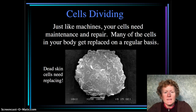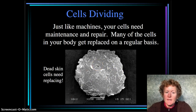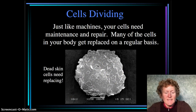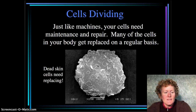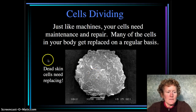Mitosis happens because cells divide. Just like machines, your cells need maintenance and repair. Skin cells are always dying — 90% of household dust is dead skin. So your skin cells need to be replaced on a regular basis, and mitosis needs to happen so healthy skin cells can divide and replace those that have died.